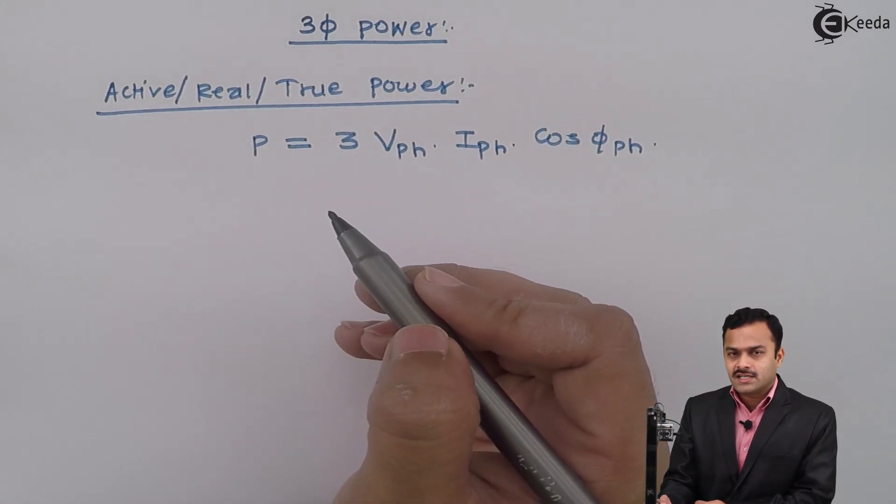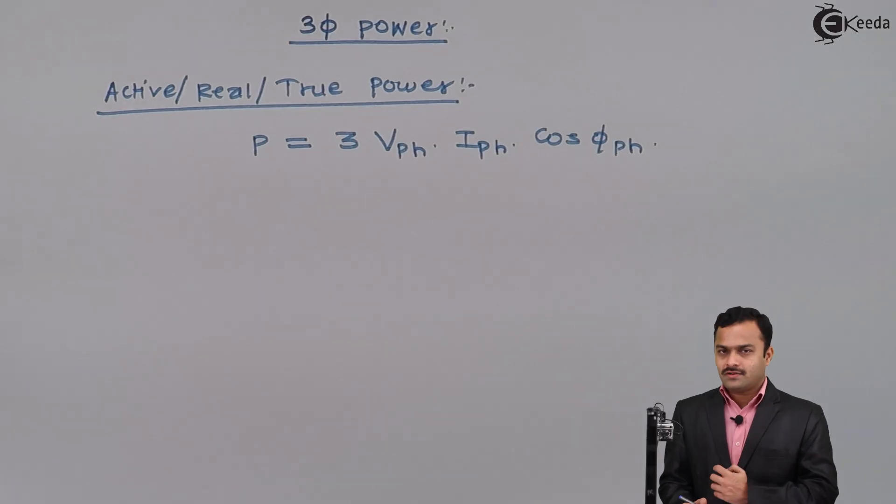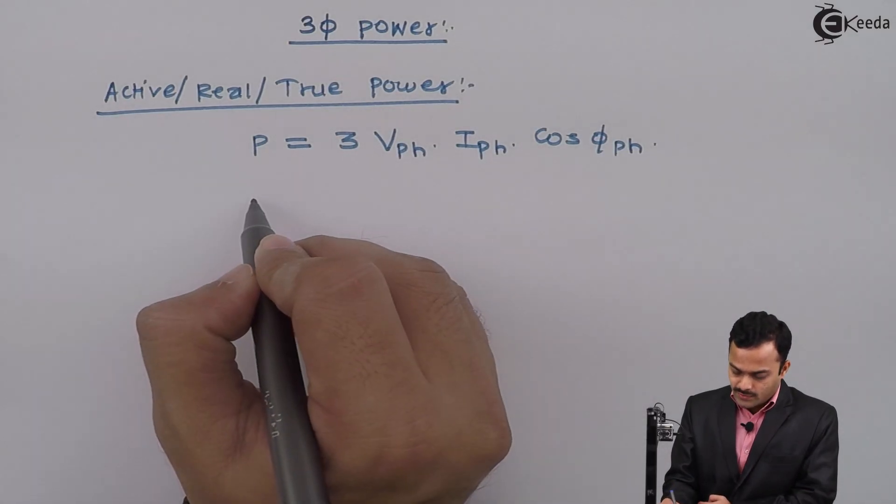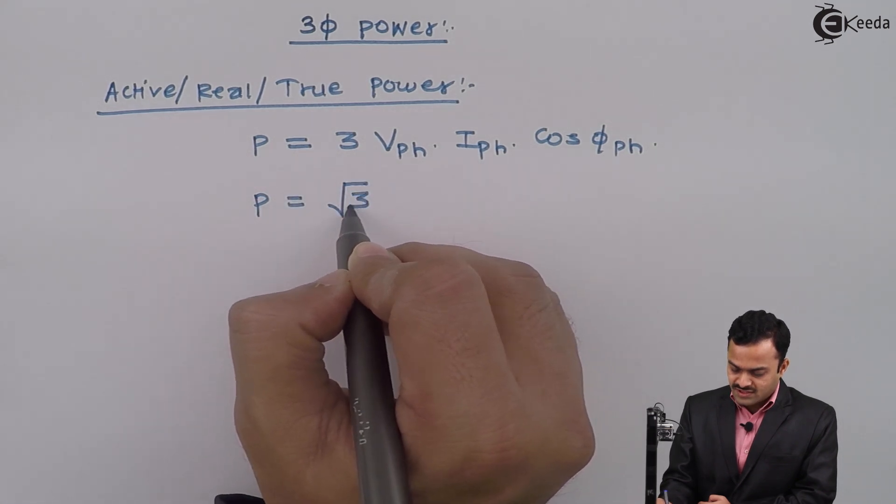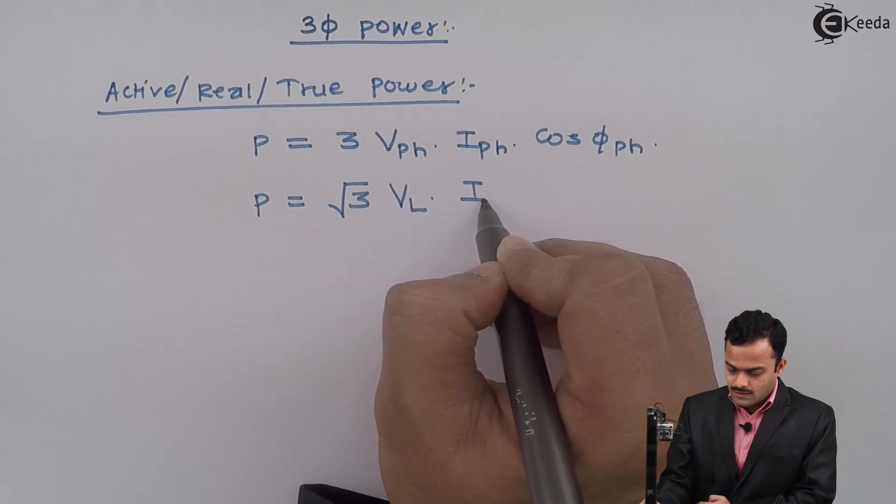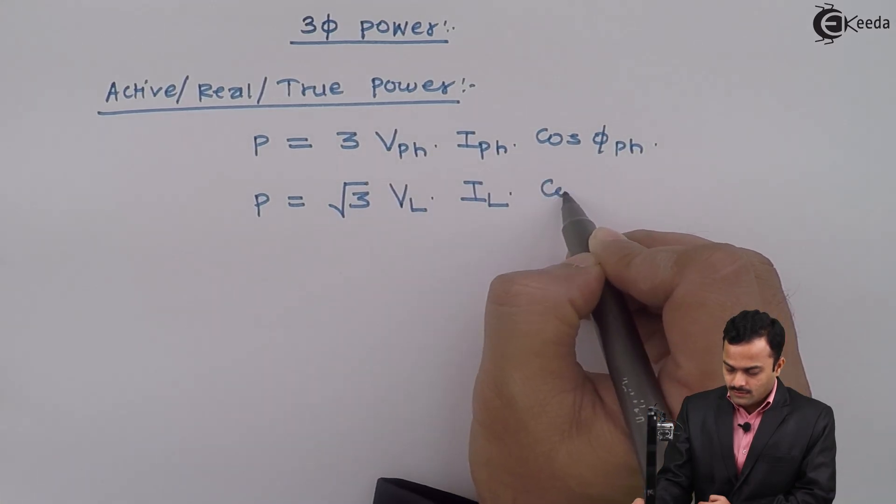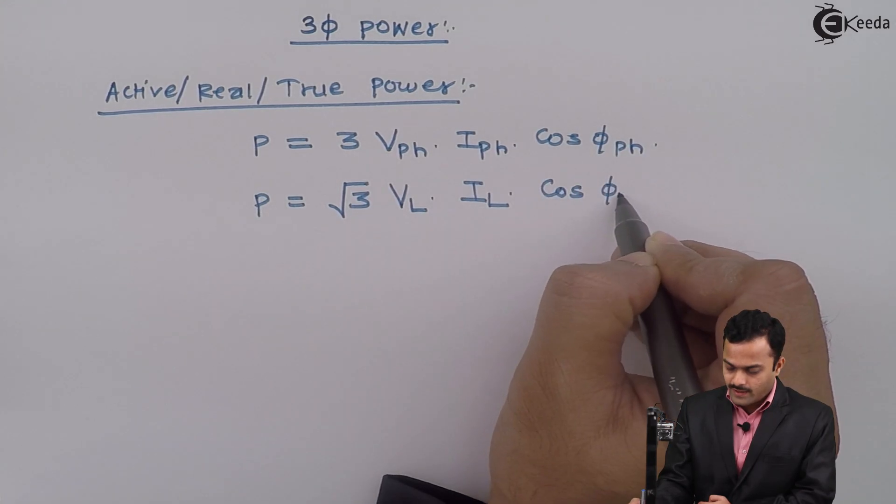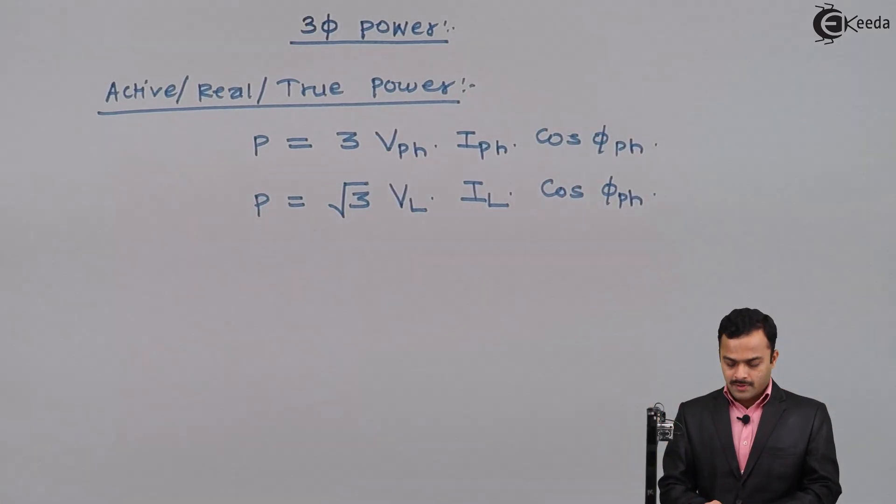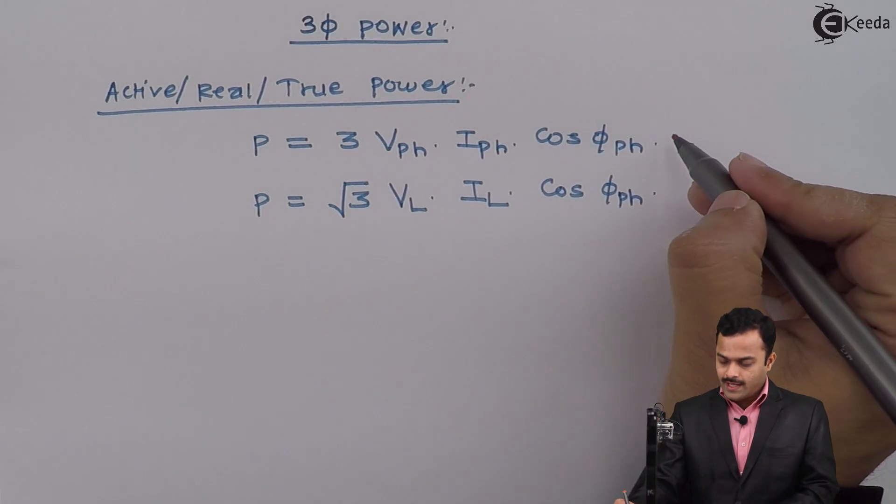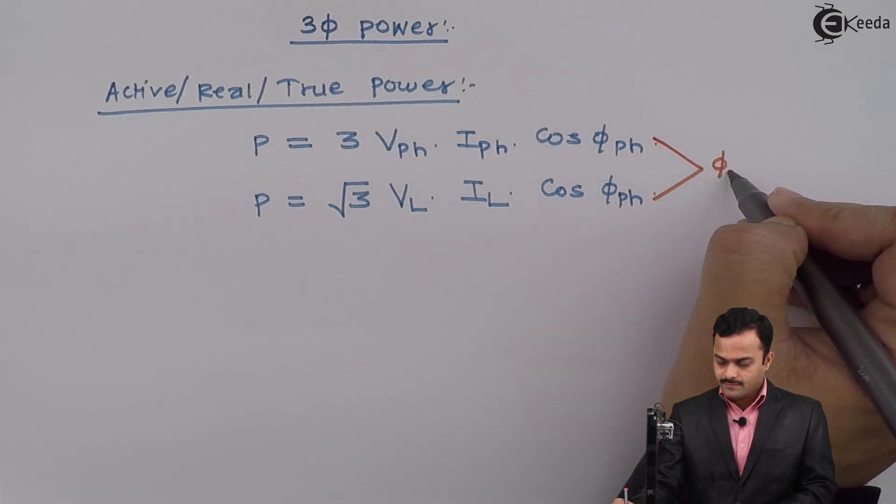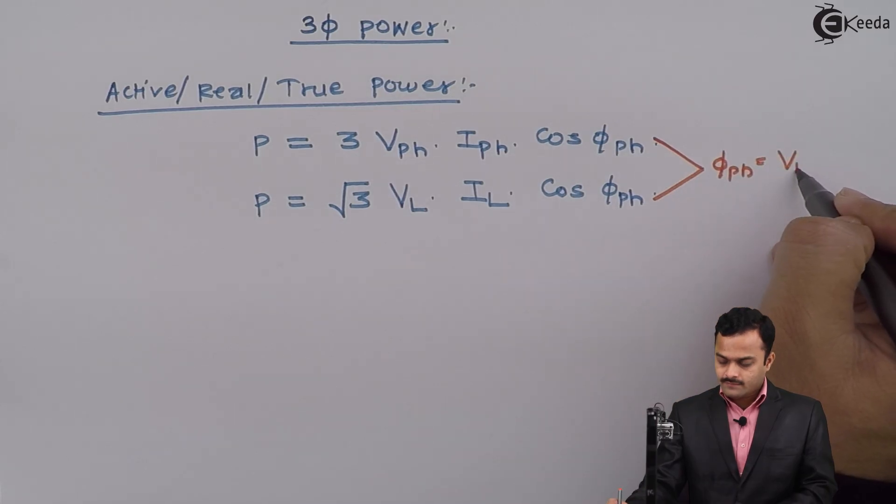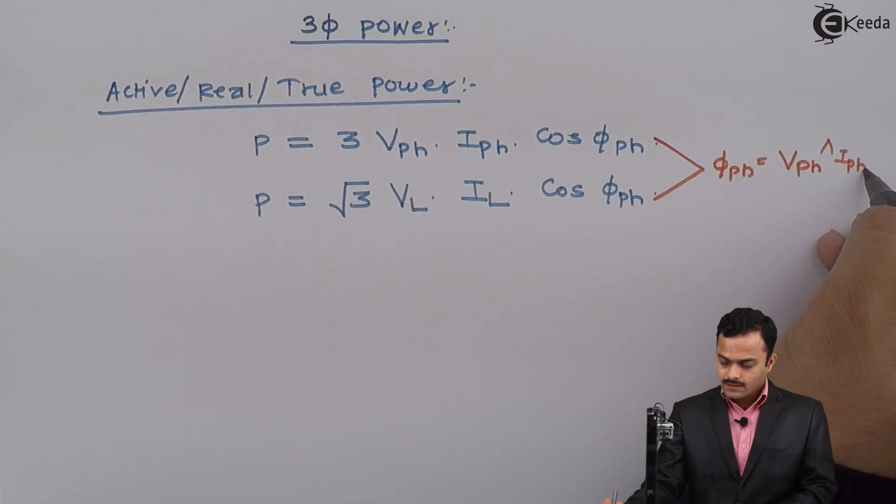Same expression we can write in terms of line quantities also. So in terms of line quantities, P is root 3 VL, IL, cos φPH. One thing you have to remember over here,